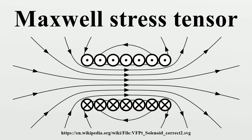The above equation represents the law of conservation of momentum in classical electrodynamics, where we have introduced the Poynting vector. In the relation for conservation of momentum, the Maxwell stress tensor is the momentum flux density and plays a role similar to the Poynting vector in Poynting's theorem.